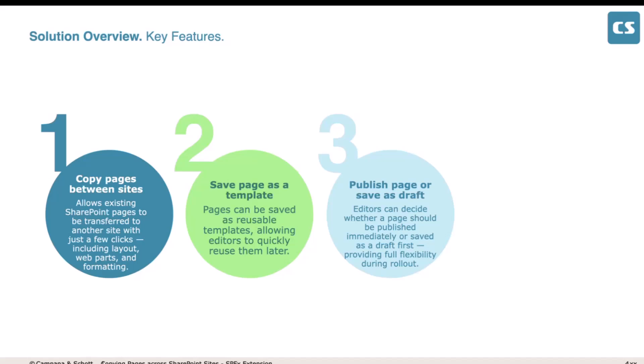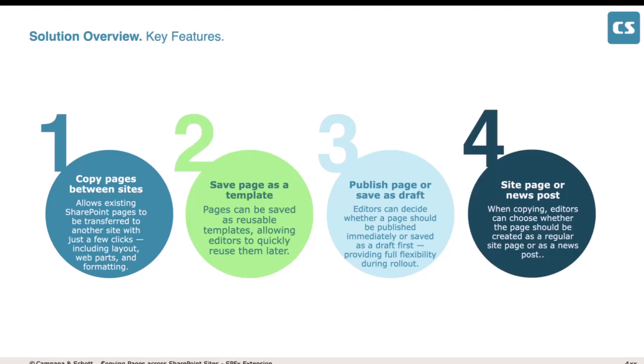Third, we can decide whether to publish directly or save as a draft. For example, the same event for all departments can be distributed and published right away. But in some cases we need to save it as a draft — like FAQs for HR where we keep the same web part structure, but the IT department needs to add their own questions, so we save it as a draft and they can work with it directly. Lastly, we can decide whether to save it as a normal page or as a news post — it's a toggle you can switch.